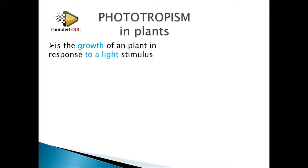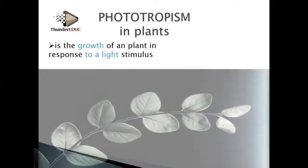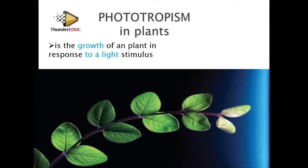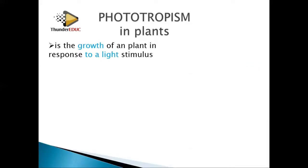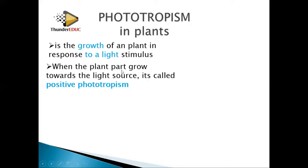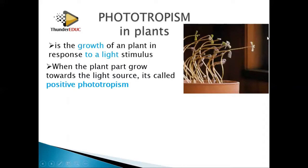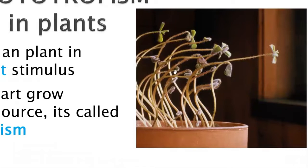We are not talking about which part of the plant — we are talking about growth of the plant. It could be a root, it could be a shoot. If it grows towards the source of light, then we say that is positively phototropic. If it is growing away from the light, then we say it is negatively phototropic. Here is an example: the plant grows towards the source of light, so we say that this is positive phototropism.